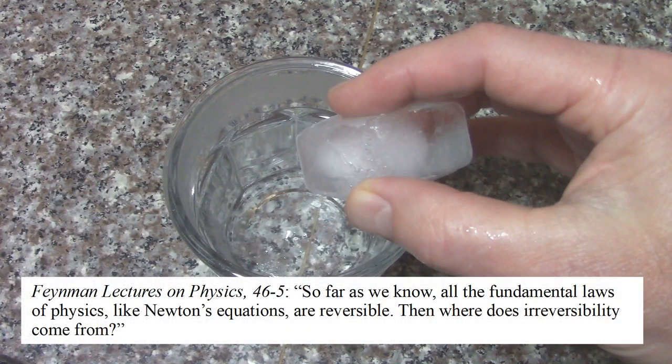To appeal to a higher authority here, let me quote Richard Feynman. So far as we know, all the fundamental laws of physics, like Newton's equations, are reversible. Then where does irreversibility come from?